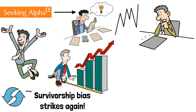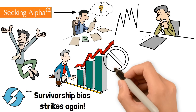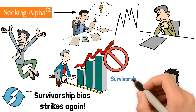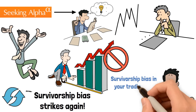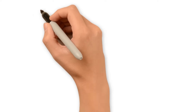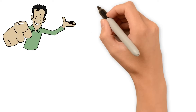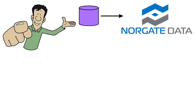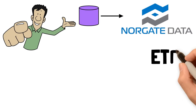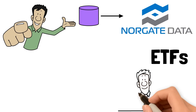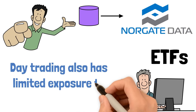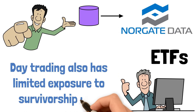Ignoring delisted stocks can lead to overestimated results that don't hold up in real trading. So how can you avoid falling victim to survivorship bias? One solution is to use databases that include delistings, like Norgate Data. Likewise, if you stick to ETFs and indices, you should be good. Day trading also has limited exposure to survivorship risk.